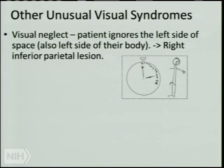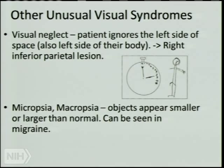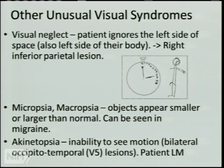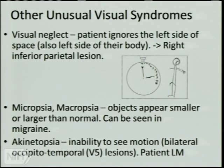Micropsia and macropsia are when objects appear smaller or larger than normal — seen in migraine and epilepsy. Akinetopsia, involving area V5 (called MT/MST in the monkey), is the inability to perceive motion. It has to be bilateral and is very rare. One patient had been in a motor vehicle accident and was comatose for months. She described standing at a street corner to cross, and a car would be far away and then suddenly right on top of her — she couldn't see it moving.